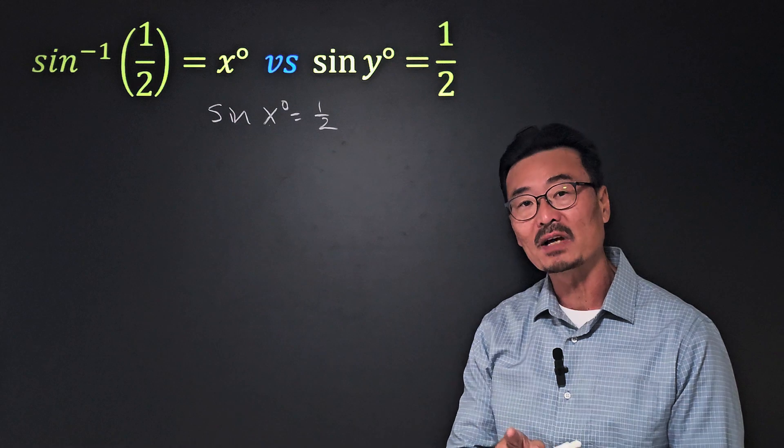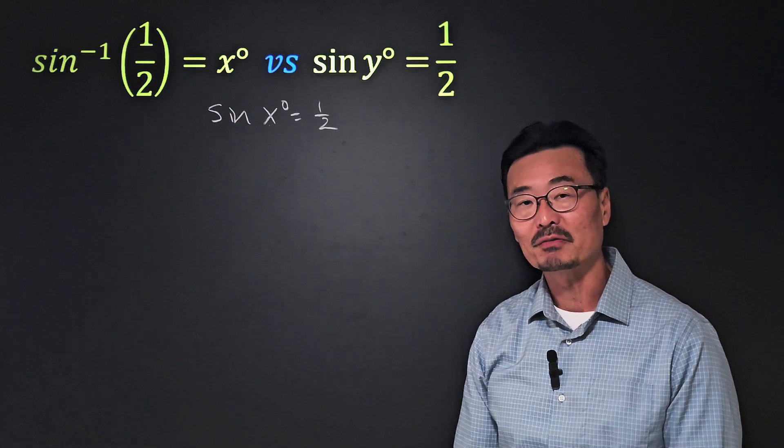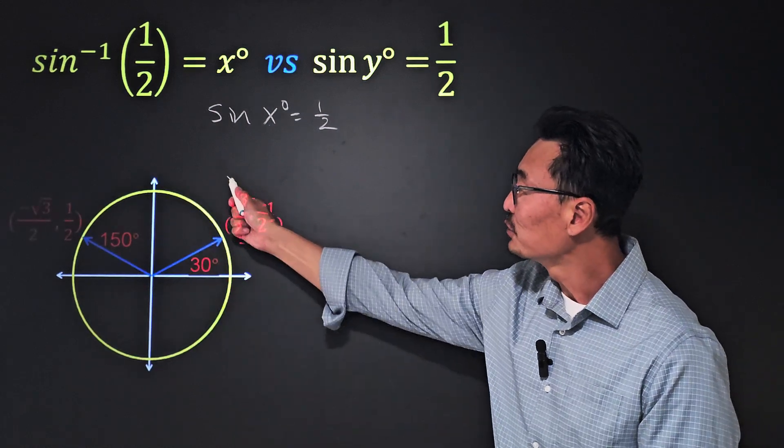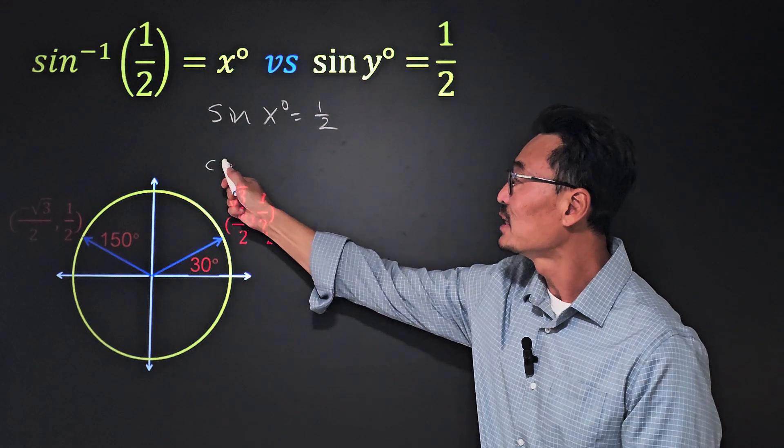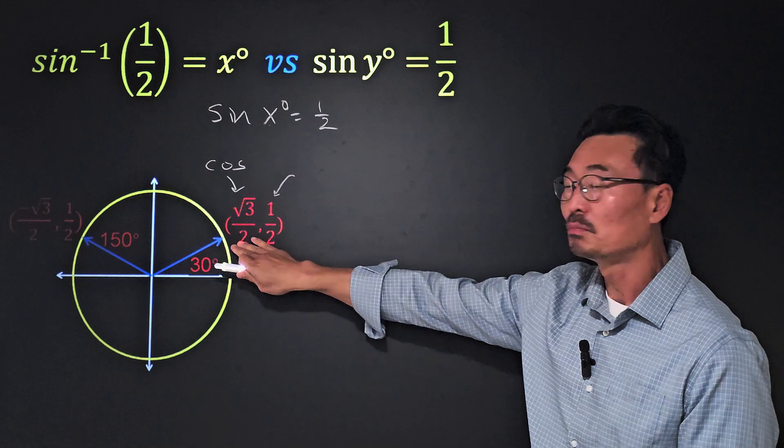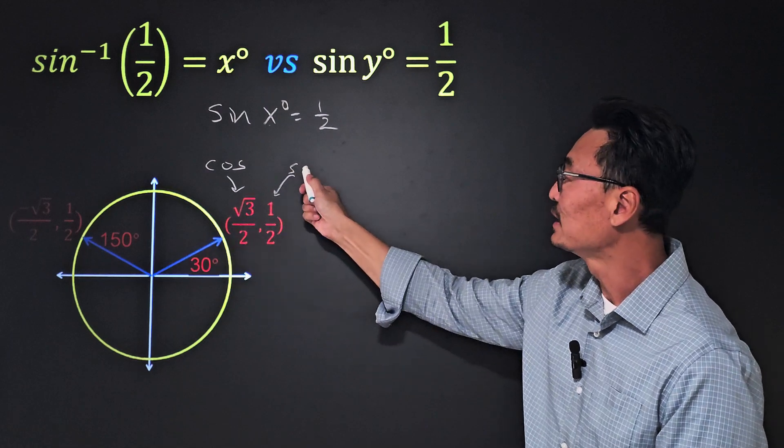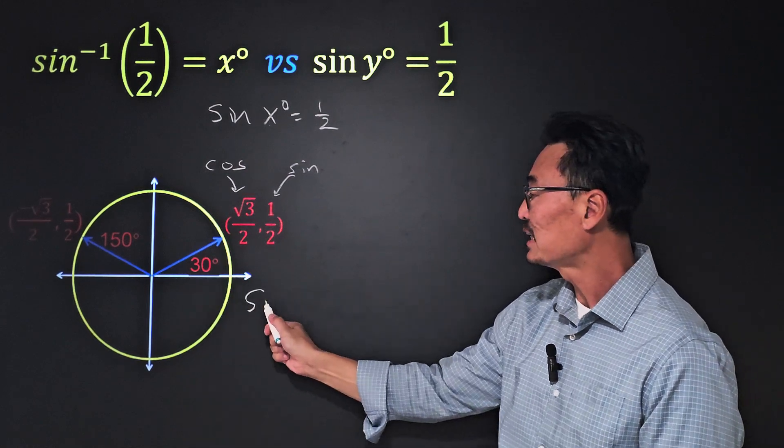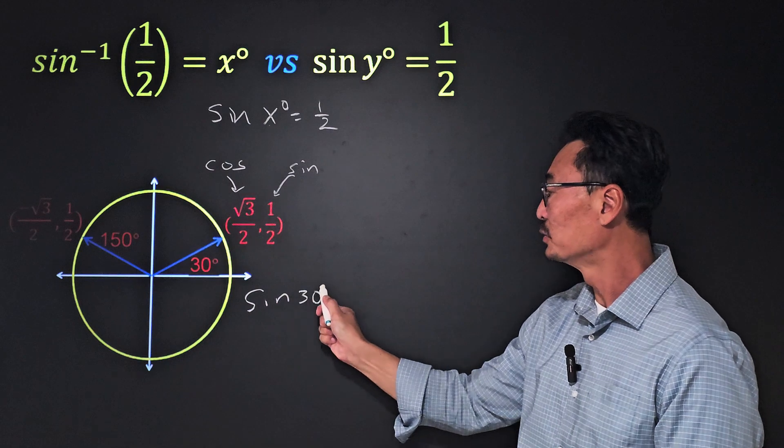Let's start by looking at a unit circle. Remember, the x value here is the cosine of the angle, and the y value of the point is going to be the sine value of the angle. Meaning here, if I have sine of 30 degrees, it equals one-half.